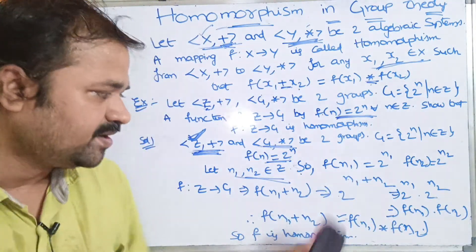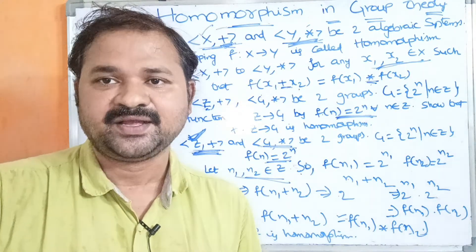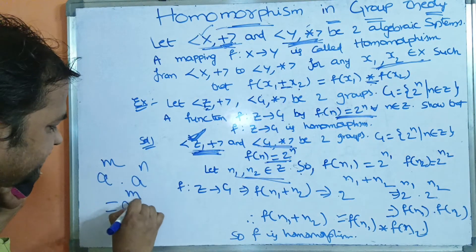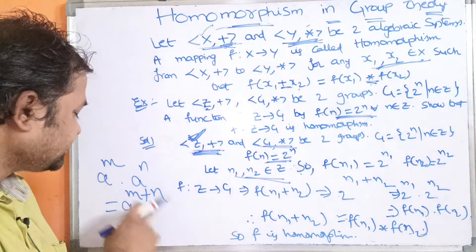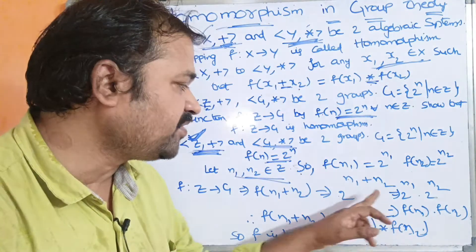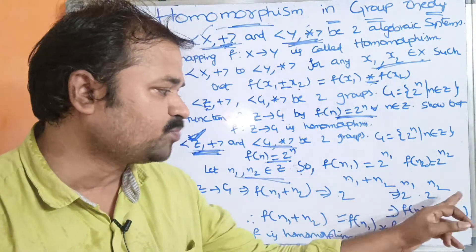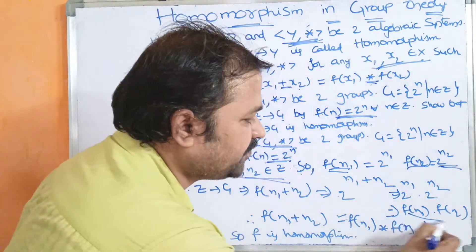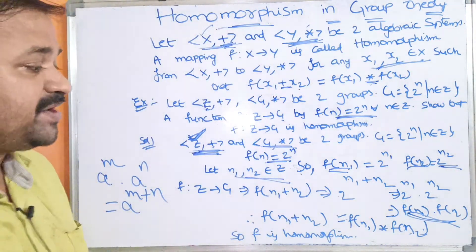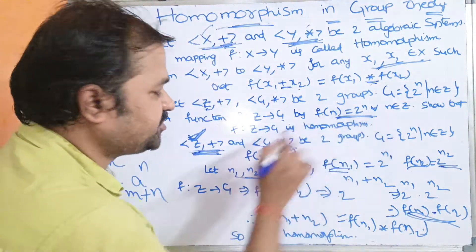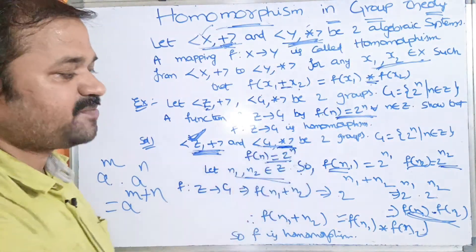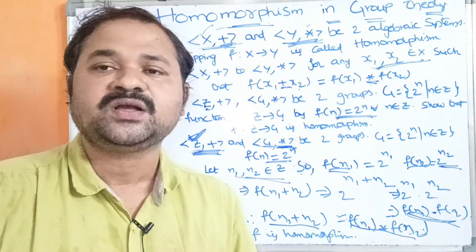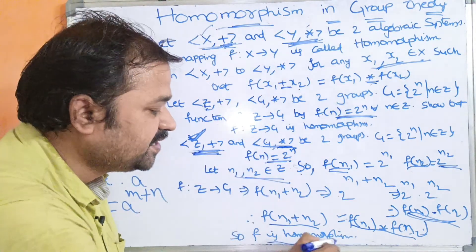Now 2^(n₁ + n₂) is in the form aᵐ⁺ⁿ = aᵐ · aⁿ, so 2^(n₁ + n₂) = 2^n₁ · 2^n₂ = f(n₁) ⋆ f(n₂), where · here represents ⋆, the second group's binary operation. Therefore f(n₁ + n₂) = f(n₁) ⋆ f(n₂), and we can conclude that f: ℤ → G is a homomorphism.